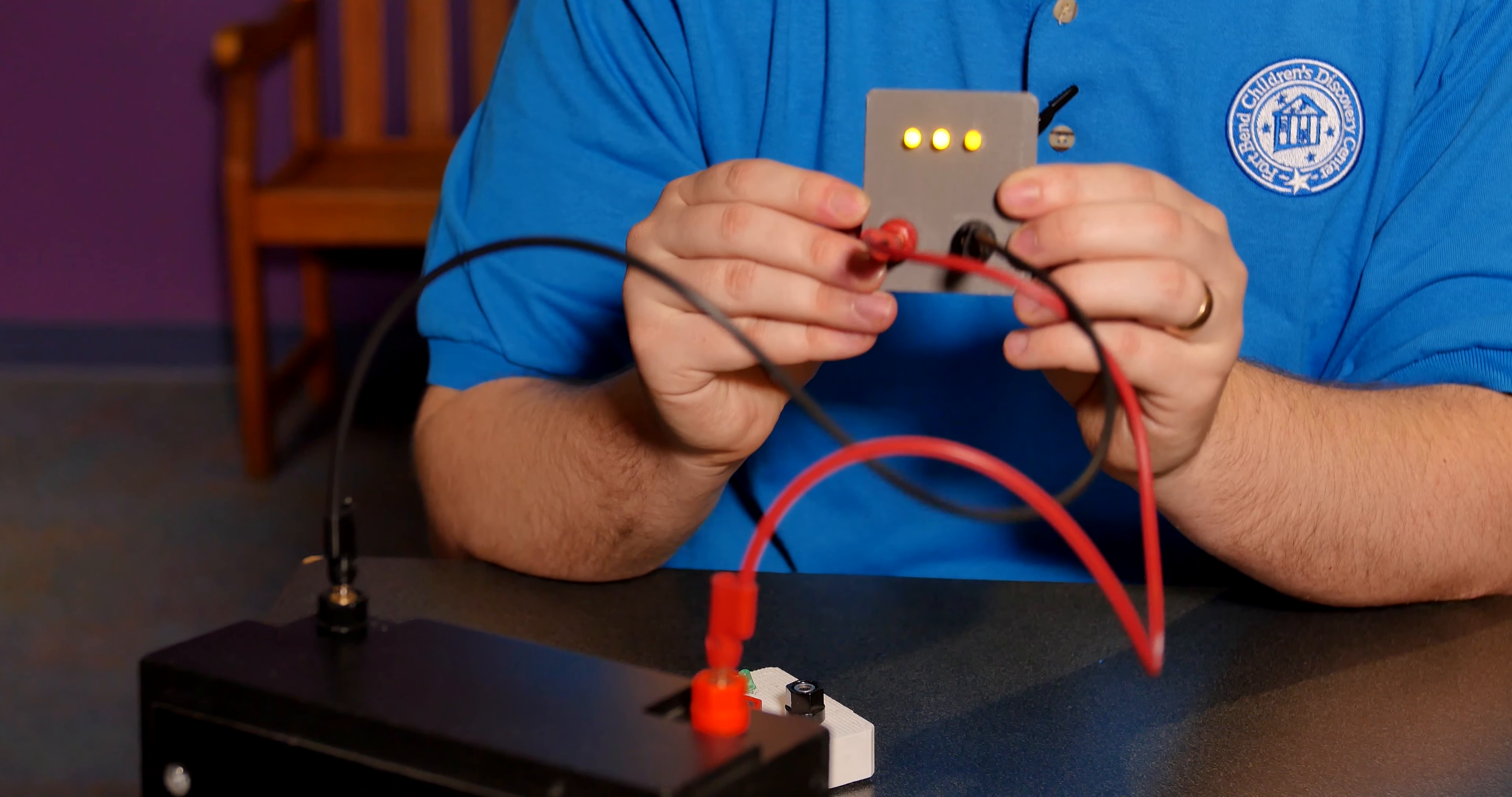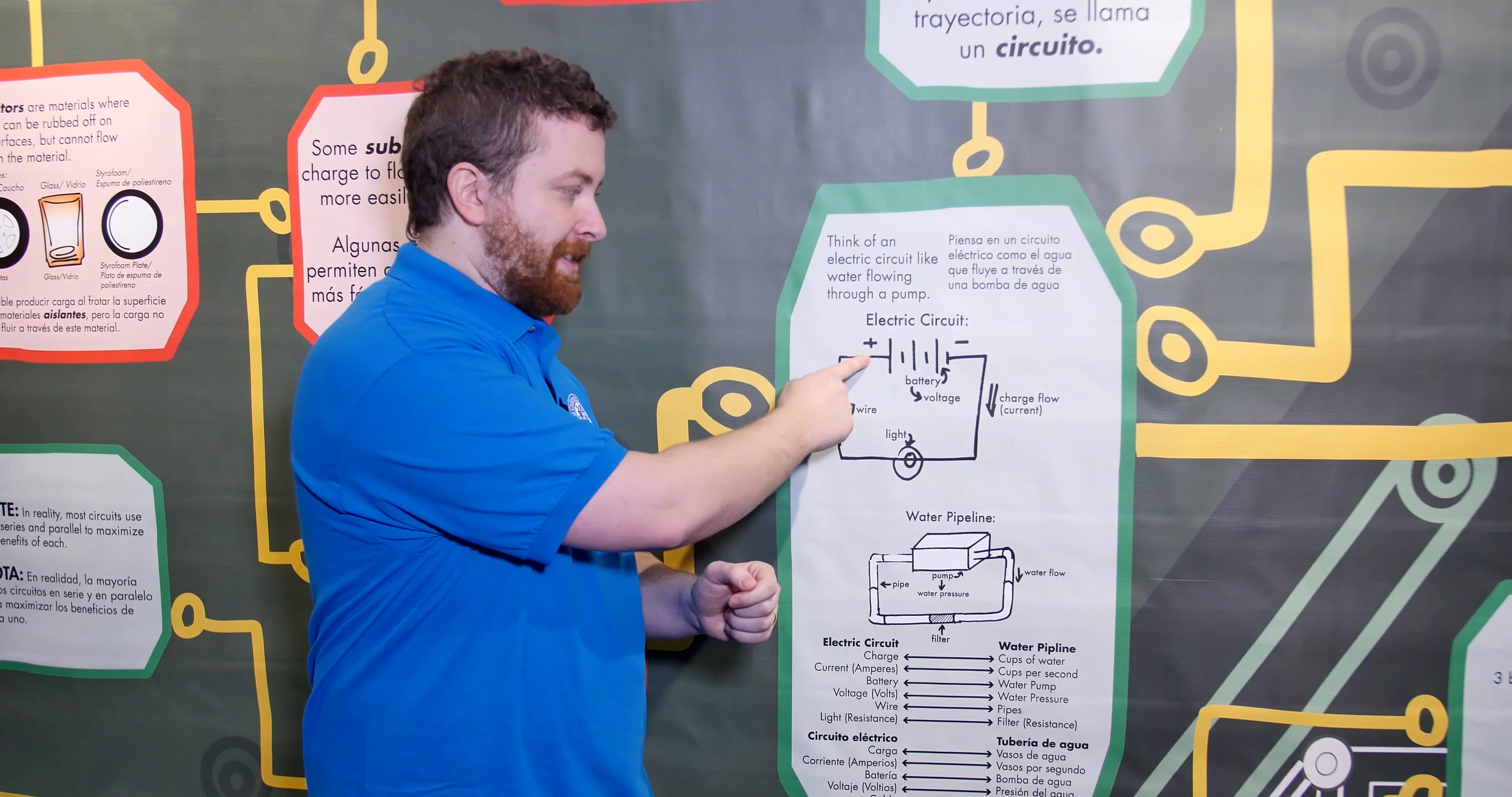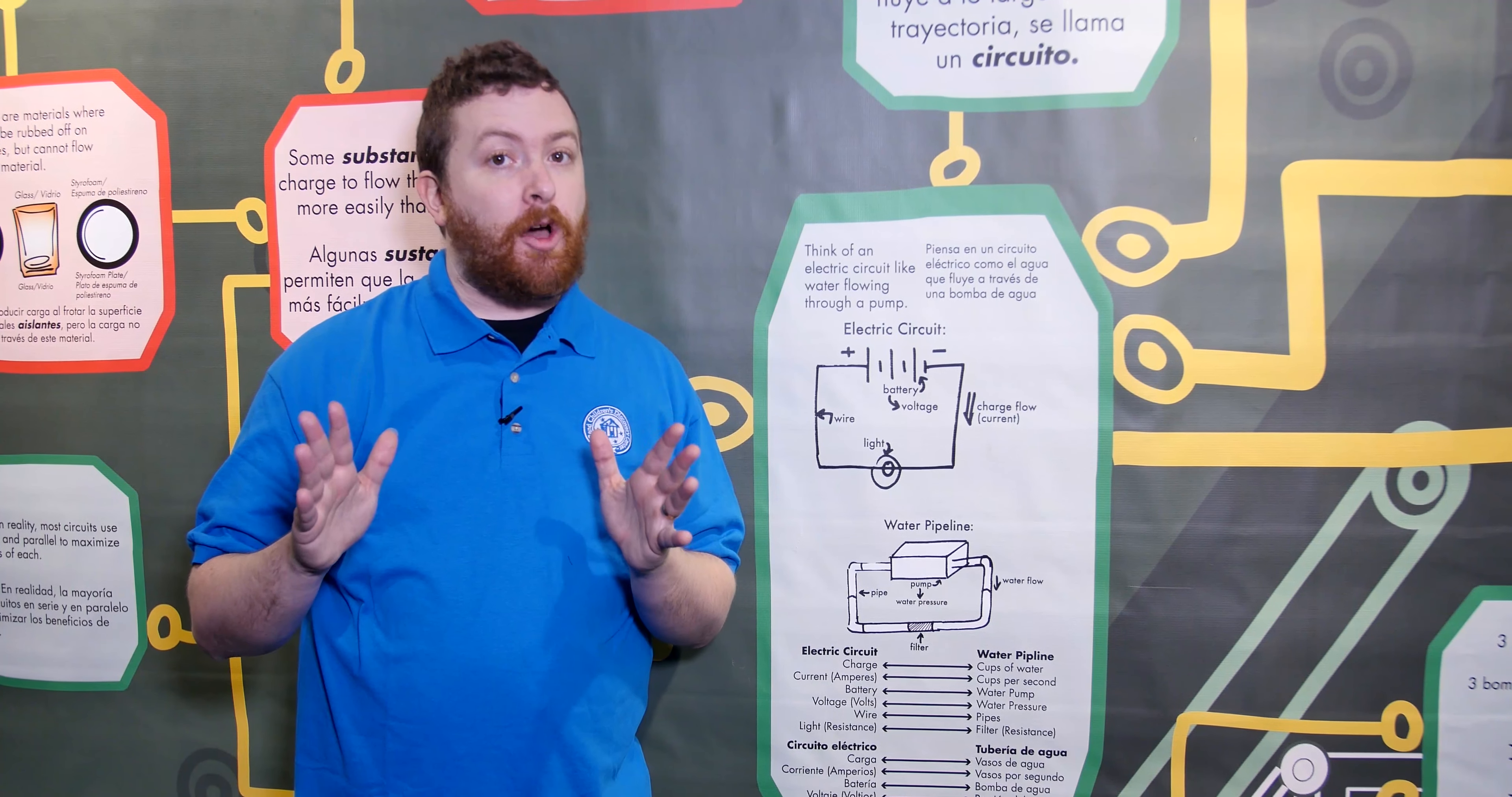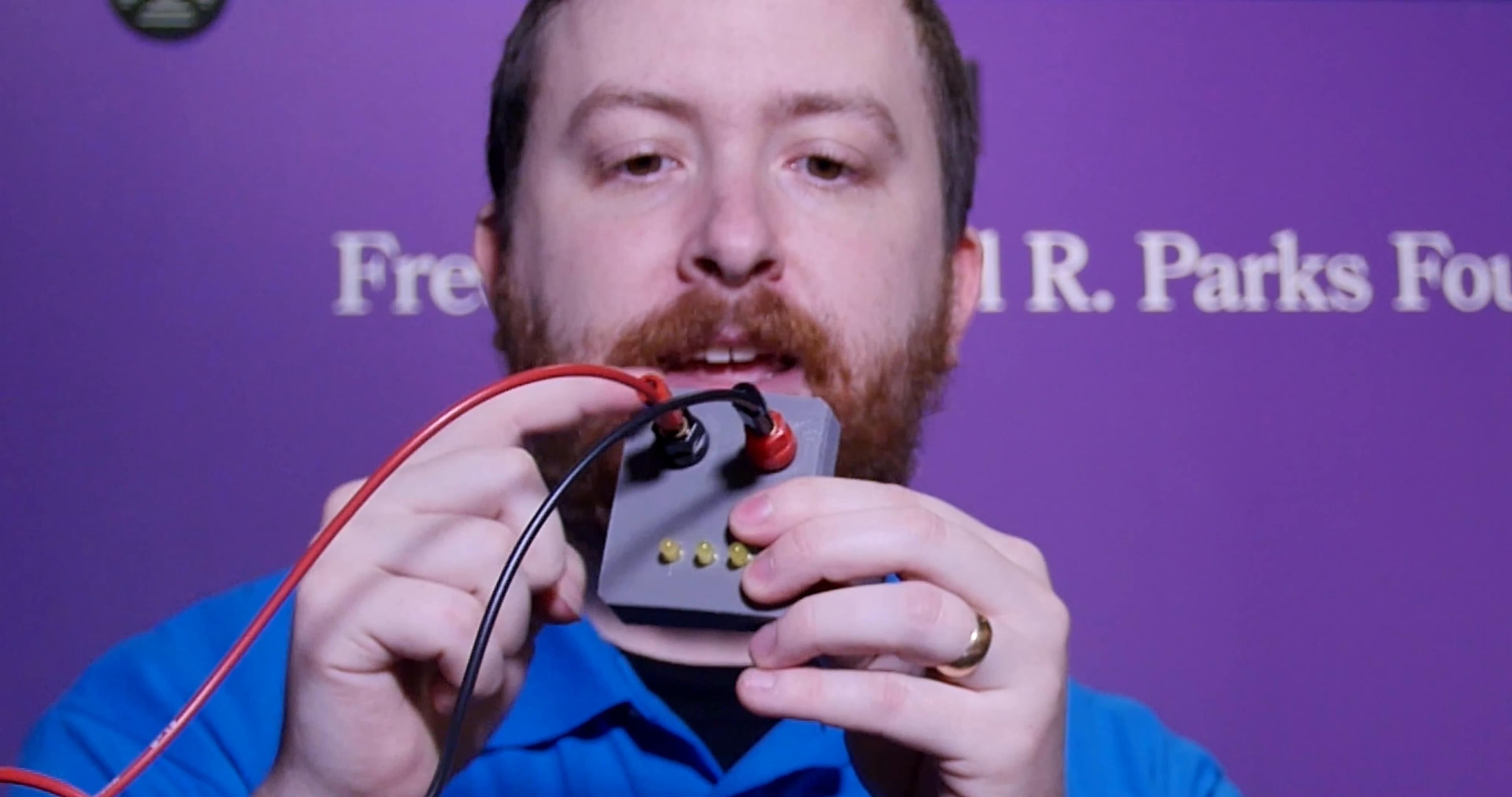So something else you might want to know about circuits is that not only are they a circle, as you can kind of see in this circuit diagram here, but they actually have electricity only flowing in one direction. This time I put the red wire into the little black node here and I put the black wire into the little red node here.